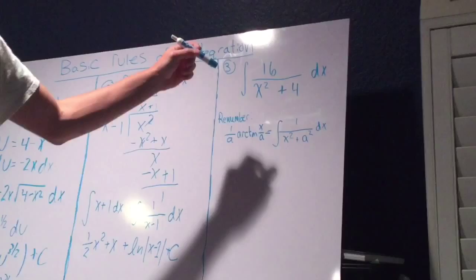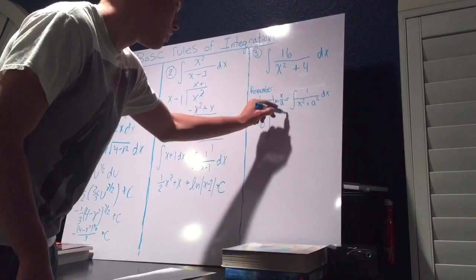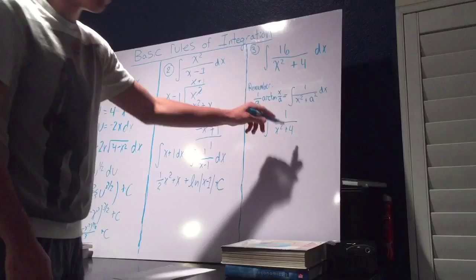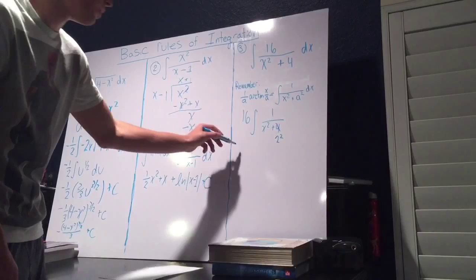If we factor out 16 from our problem, we get 16 times the integral of 1 over x squared plus 4. Now 4 is a perfect square, and we can rewrite that as 2 squared. Now we have our a, our x, and what we factored out. So we can get, after we integrate...